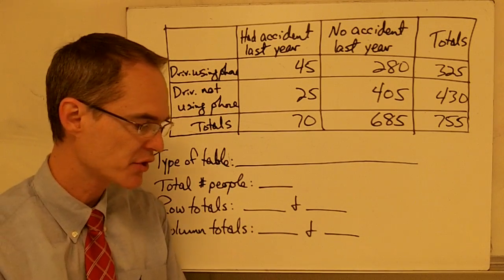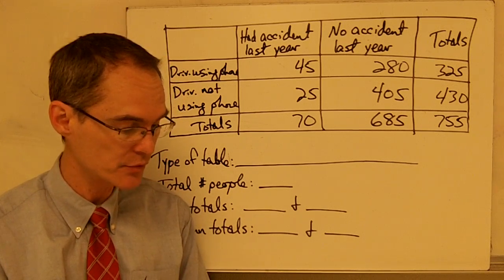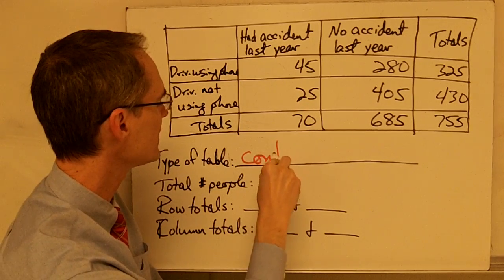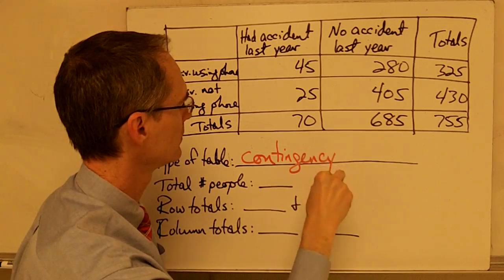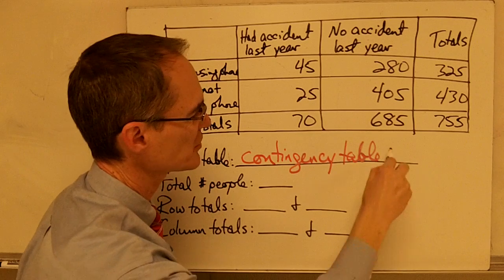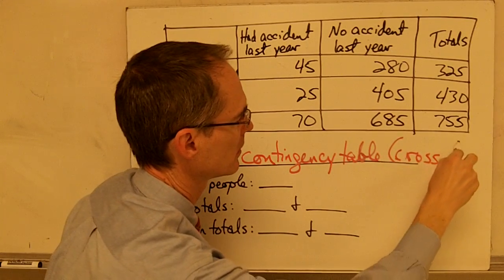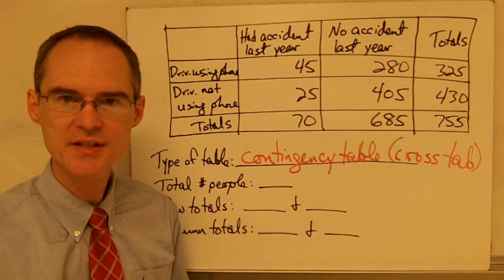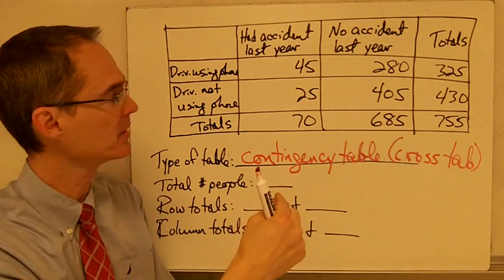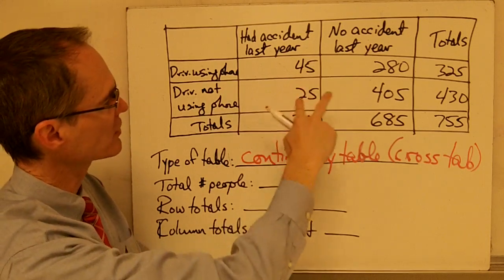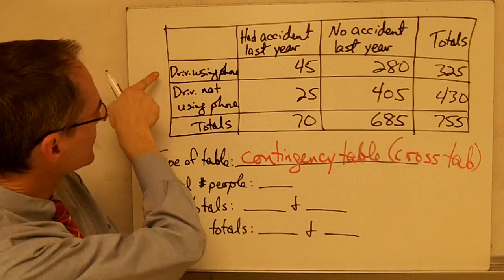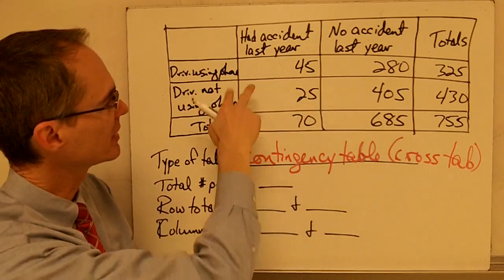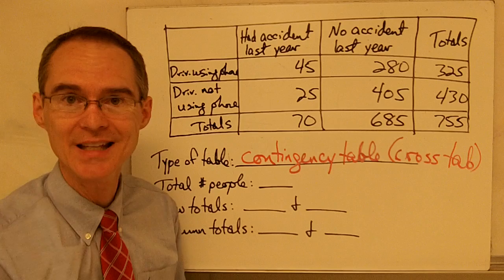Suppose a study of car accidents and drivers who use mobile phones produced some data. This type of table is called a contingency table, sometimes also called a cross tab. It's similar to a frequency table, but it covers two different things at the same time: was the driver using a phone or not, and did the driver have an accident or not. A contingency table typically has more than one variable listed.